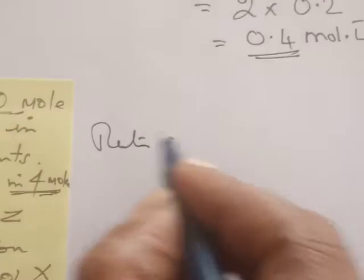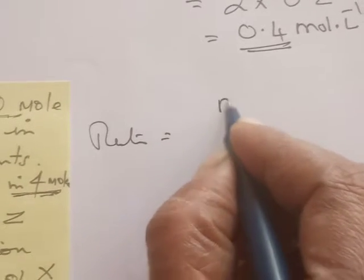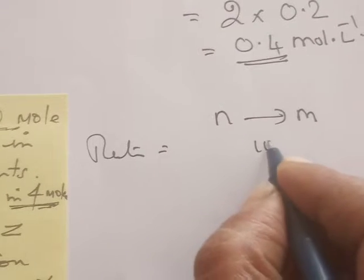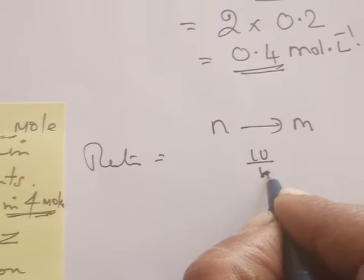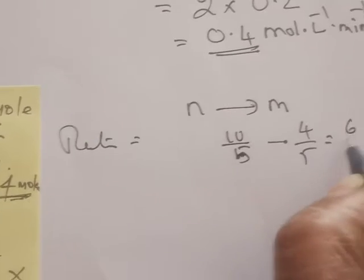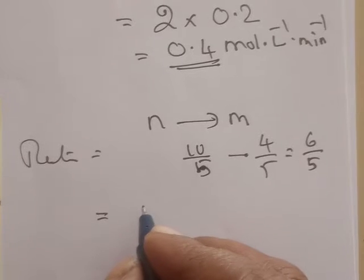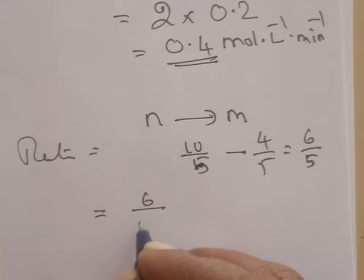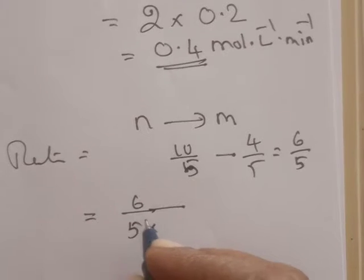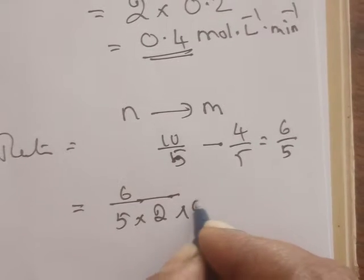Now the rate equals the change in concentration, but first convert the number of moles into molarity. The initial concentration is 10 by 5 and the final concentration is 4 by 5. The difference is 6 by 5, so this is the change in concentration. The rate of reaction is change in concentration, which is 6 by 5, divided by the coefficient, which is 2, and the time, which is 2 minutes.